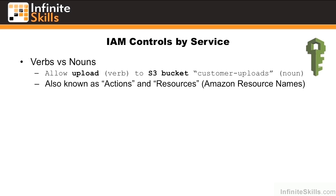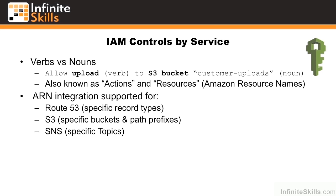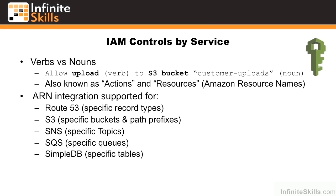These are also known as actions and resources, or what Amazon commonly refers to as Amazon Resource Names, or ARNs. ARN or noun-level integration is supported for Route 53 for specific record types, in S3 for specific buckets and path prefixes, in SNS for specific topics, in SQS for specific queues, or in SimpleDB for specific tables. This is actively being added to by AWS, and more resource-level control is expected for more services in the future.